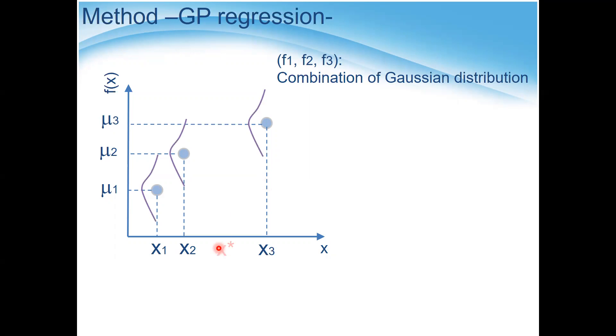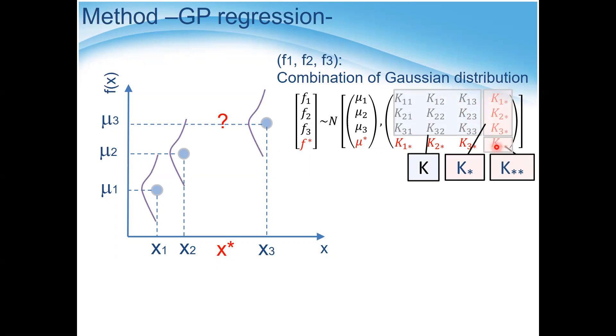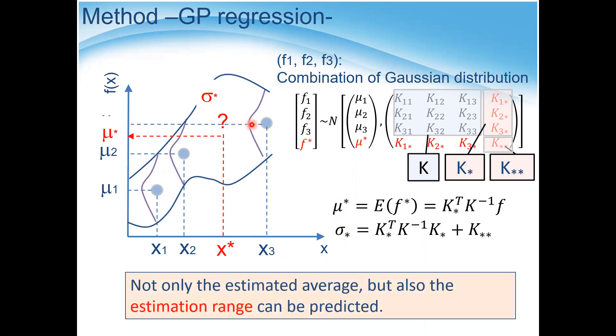By doing this, looking at the signal, now you want to know the value at x star. In this case, you can make some extra component to the multivariate Gaussian distribution. By using the matrix component in this covariance matrix, you could actually calculate the average value and the dispersion value of x star. If you do the same procedure in any data point in x, you can obtain the prediction range of the function. The good thing is not only the average value, but also the estimation range can be predicted by using GP regression.